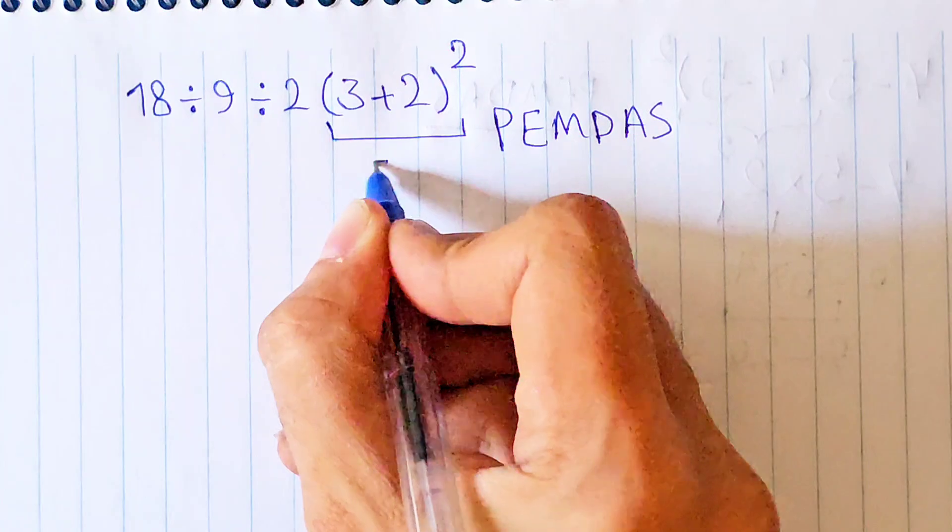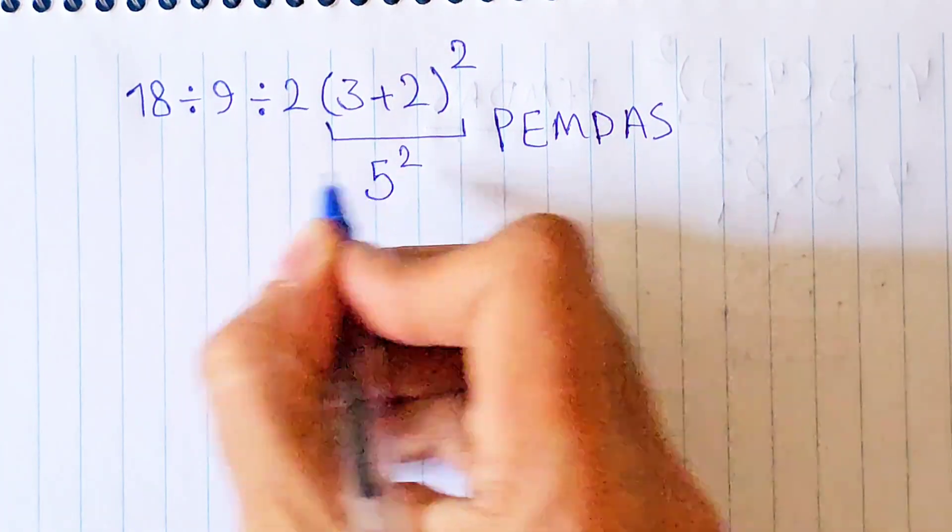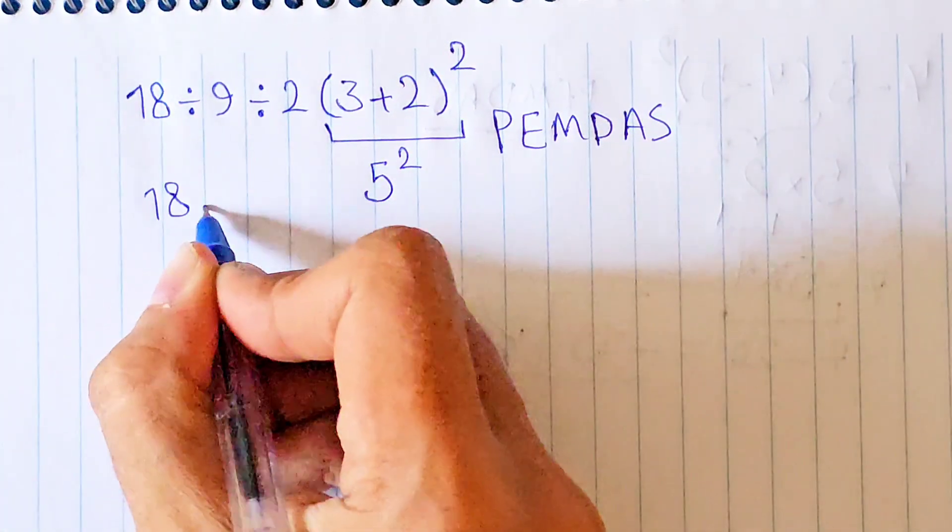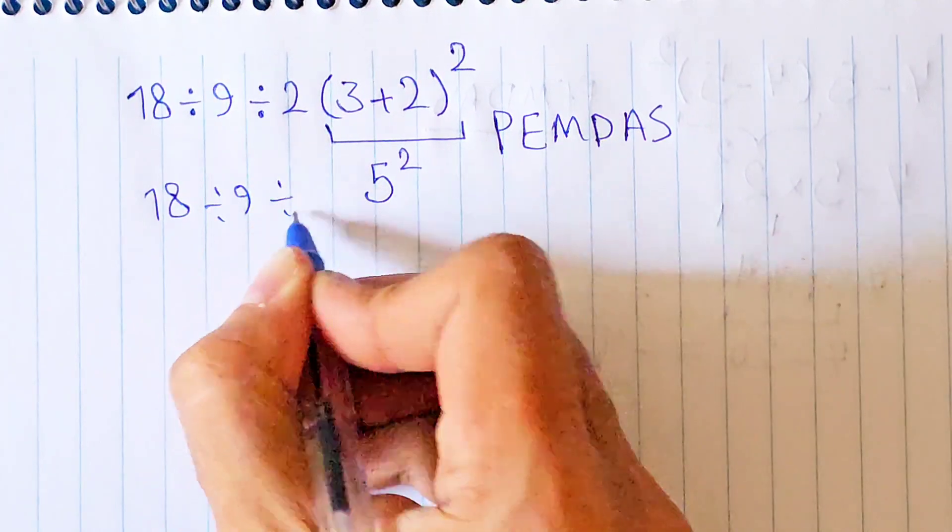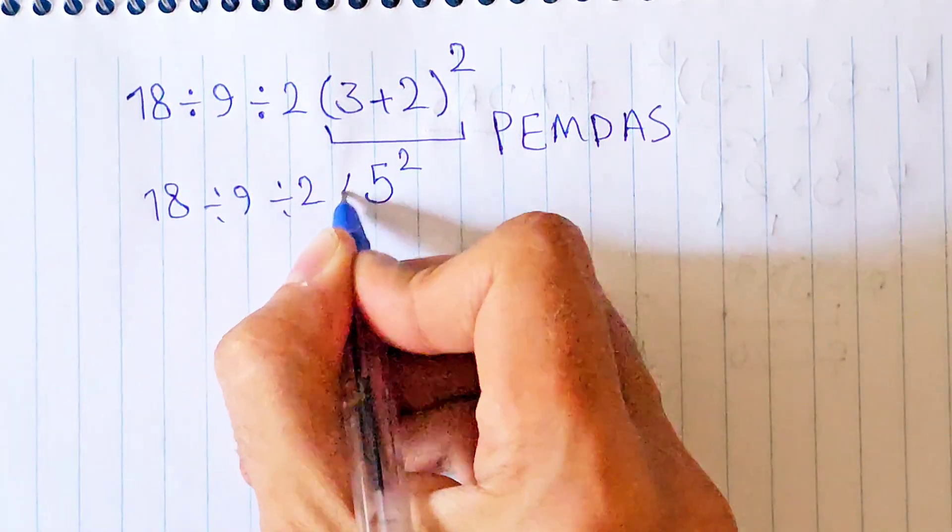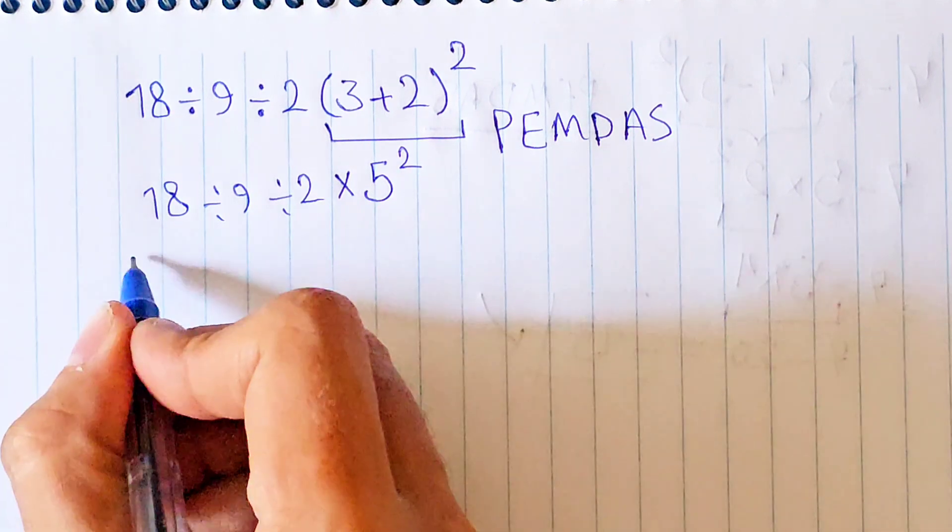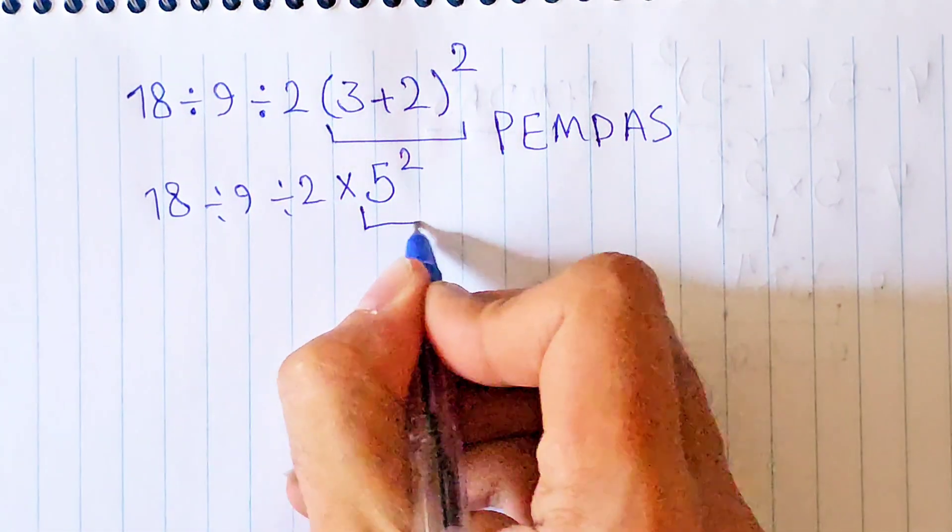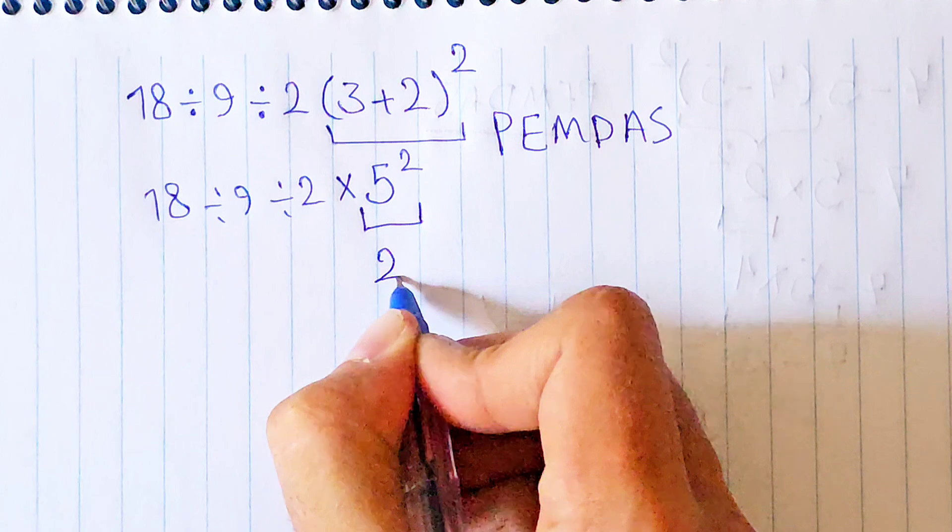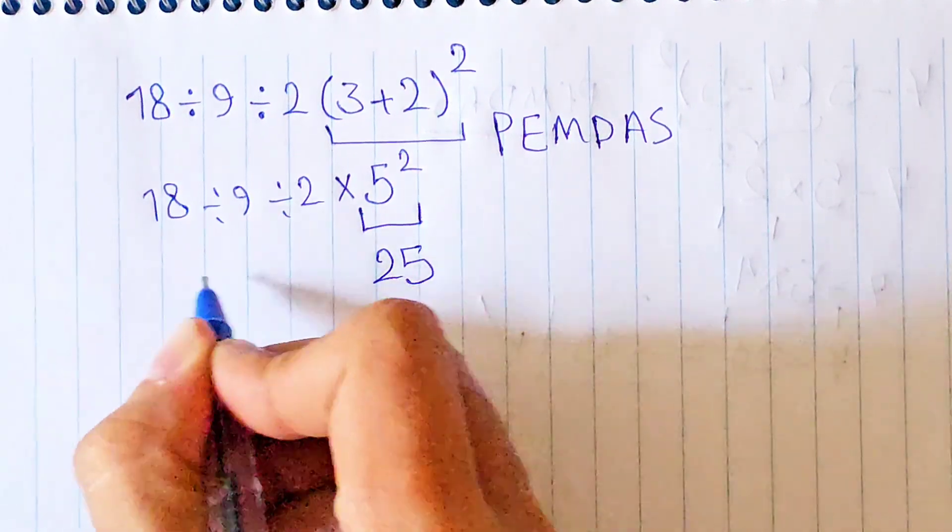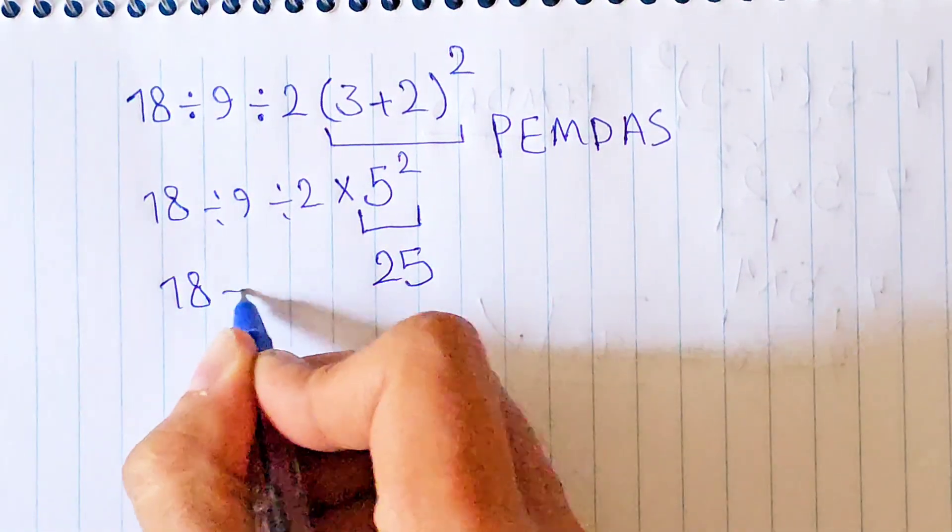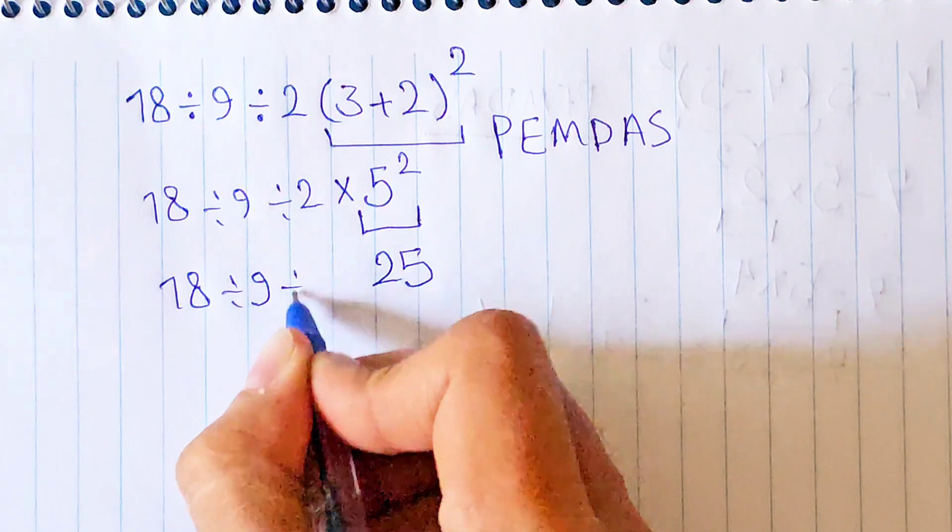3 plus 2 equals 5. Now we have a new expression that has division, multiplication, and exponent. In this step we simplify the exponent that you see: 5 to the power of 2 equals 25. 18 divided by 9 divided by 2 times 25.